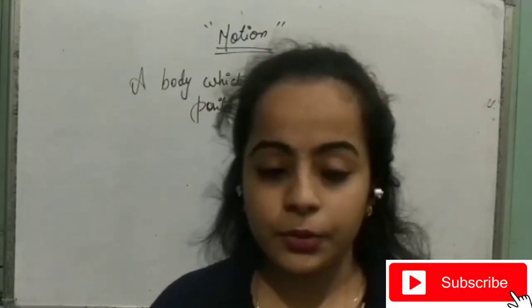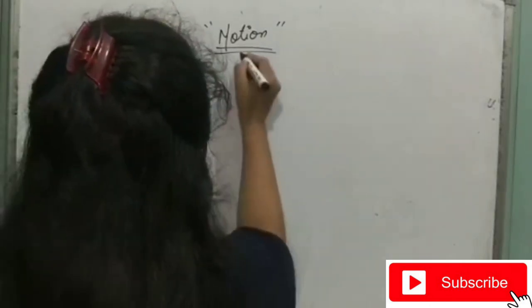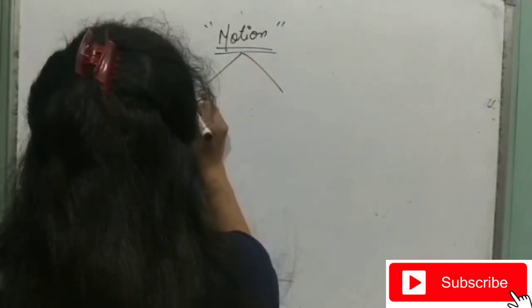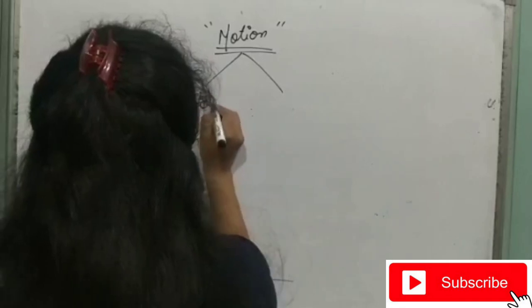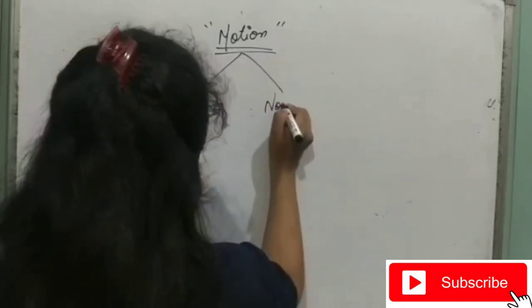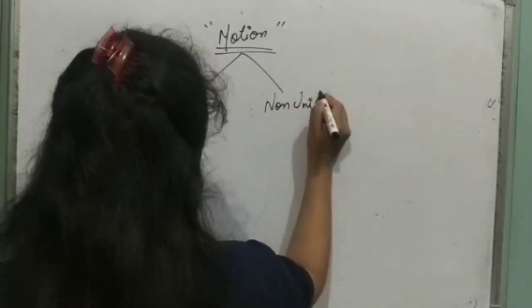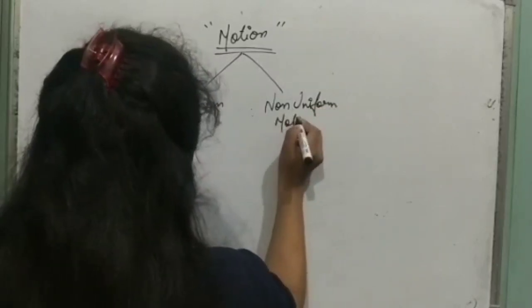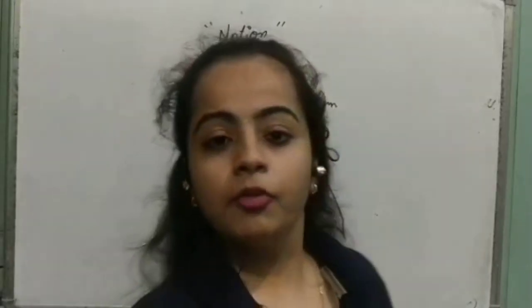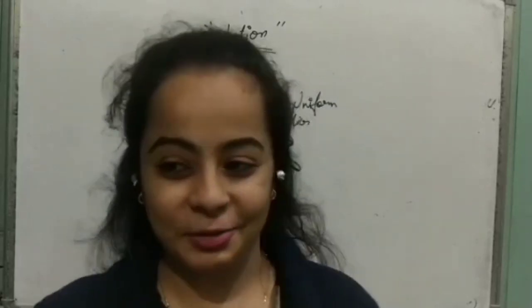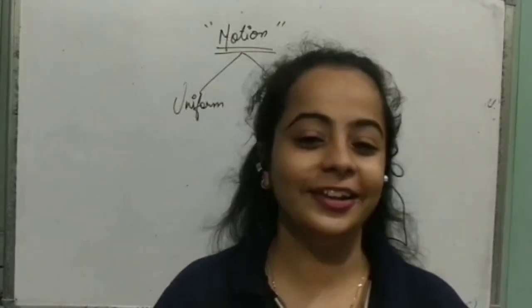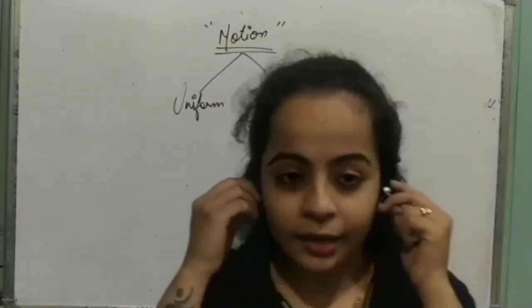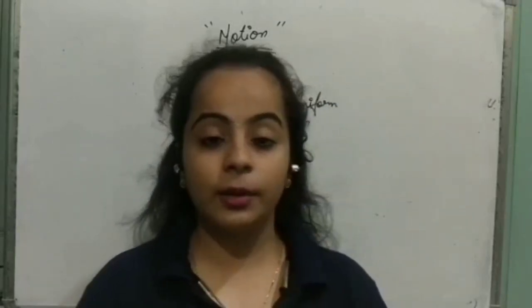What is motion? Now students, there are two types of motion. First one is uniform and the second one is non-uniform. So uniform motion — it's not like that if you are wearing a uniform and walking, you are in uniform motion. No, not at all.